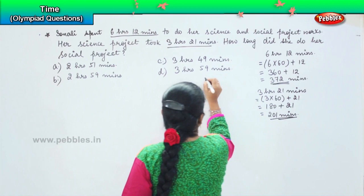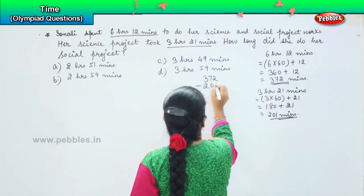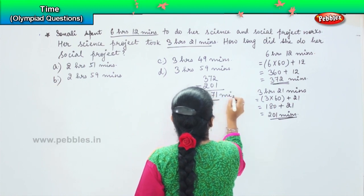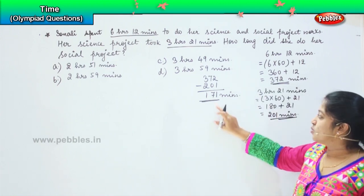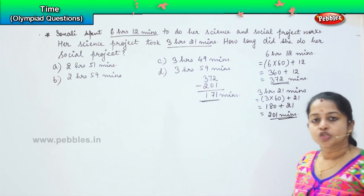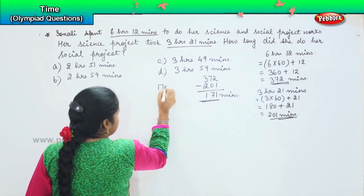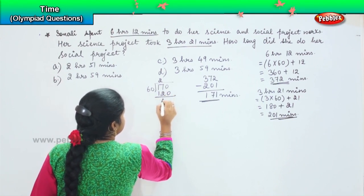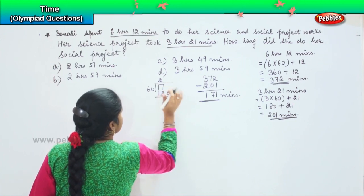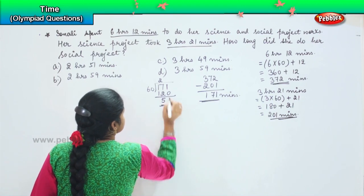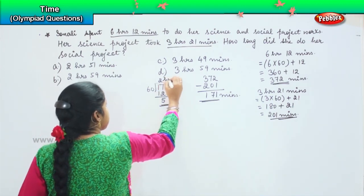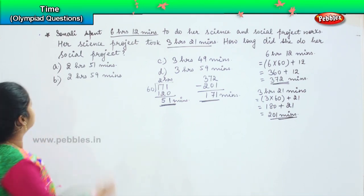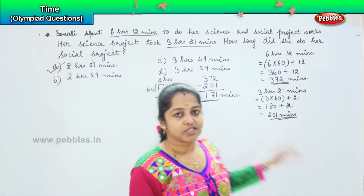So now we subtract: three hundred and seventy-two minus two hundred and one, which gives one hundred and seventy-one minutes. So one hundred and seventy-one minutes was consumed to do the social project. Now we convert it back into hours by dividing by sixty: one hundred and seventy-one divided by sixty gives two hours and fifty-one minutes. So the answer is Option A, two hours and fifty-one minutes.